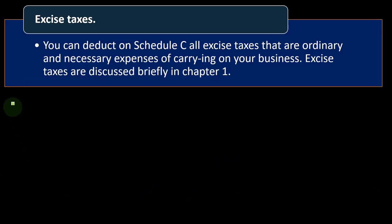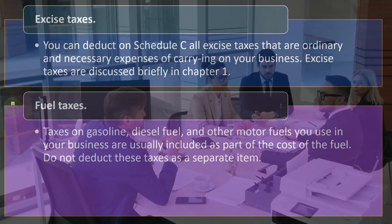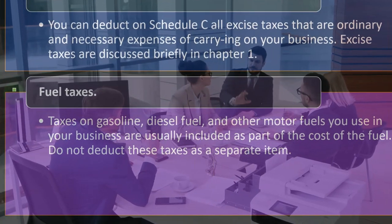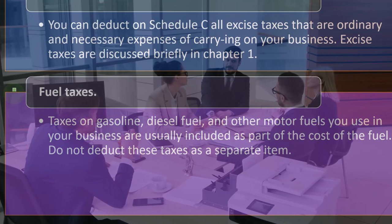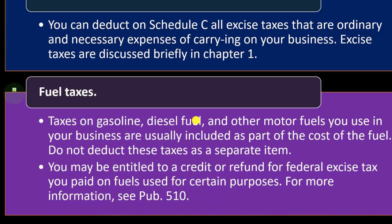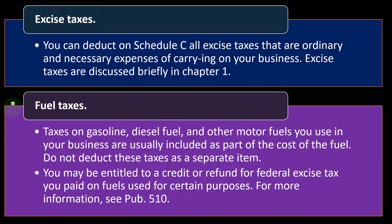For excise taxes, you can deduct on Schedule C all excise taxes that are ordinary and necessary expenses of carrying on your business. Excise taxes are discussed in Chapter 1. For fuel taxes — taxes on gasoline, diesel fuel, and other motor fuels used in your business — these are usually included as part of the cost of the fuel, similar to sales tax, so do not deduct these as a separate line item. You may be entitled to a credit or refund for federal excise tax paid on fuels used for certain purposes; see Publication 510 for more information.